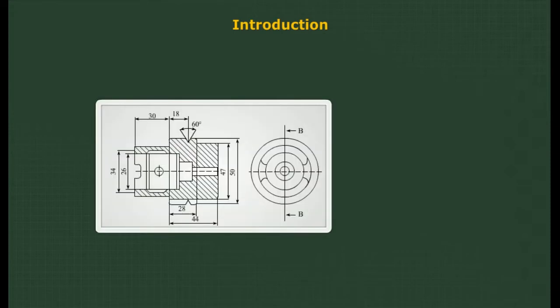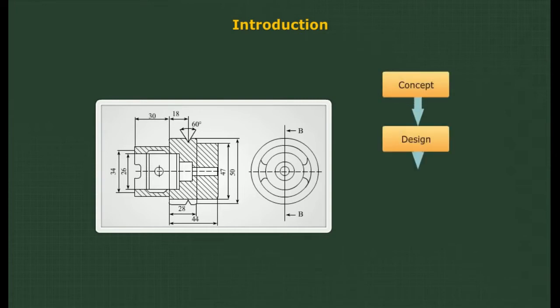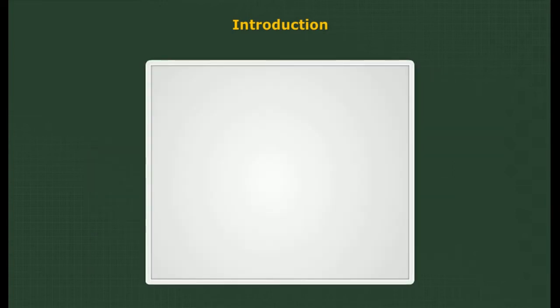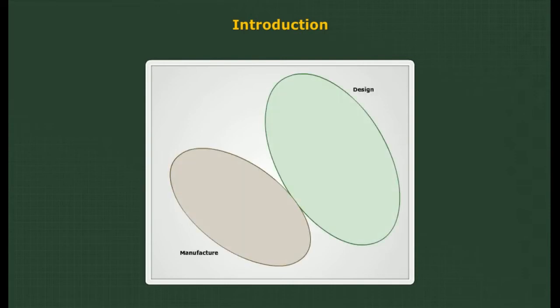Introduction to production drawing and engineering life cycle: where does production drawing fit in? Production drawing is not the same as design, but an integral part of the product life cycle. The life cycle of a product starts from concept, followed by design, manufacture, and lastly customer satisfaction. The life cycle consists of three phases: design phase, manufacture phase, and market phase.